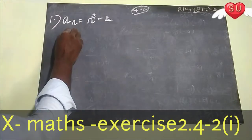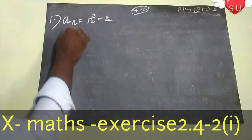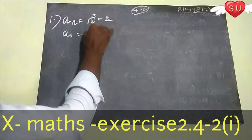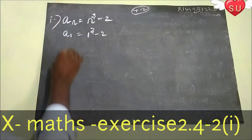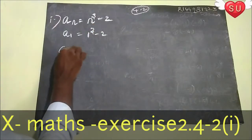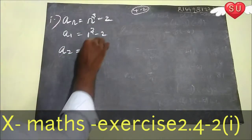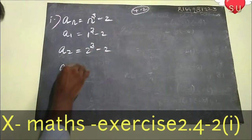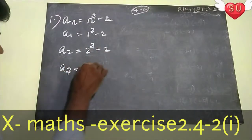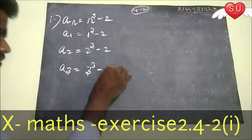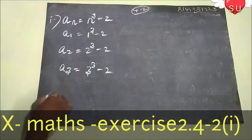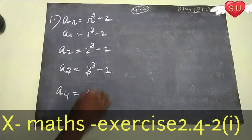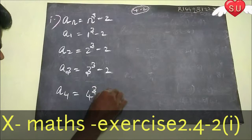So next, A^1 equals 1³ minus 2. Then A^2 equals 2³ minus 2. Next, A^3 equals 3³ minus 2. Next, A^4 equals 4³ minus 2.